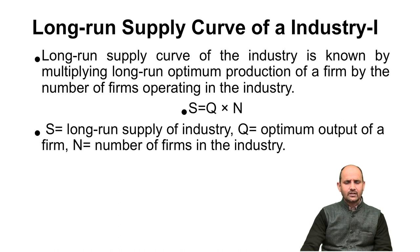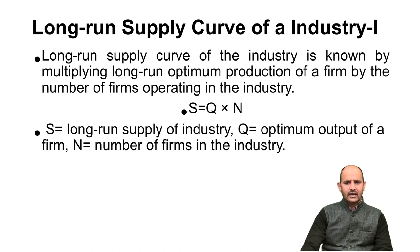In the formula S = Q × N: S stands for the long-run supply curve of the industry, Q stands for the optimum output of an individual firm, and N stands for the number of firms in the industry. When we multiply the optimum output of a firm by the number of firms in the industry, that gives us the long-run supply curve of the industry.